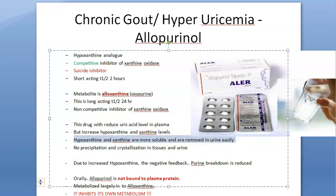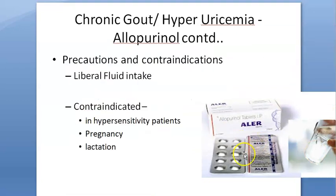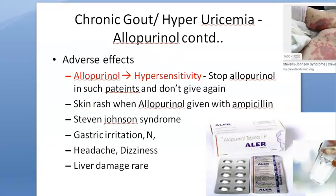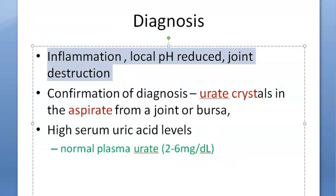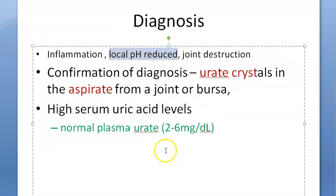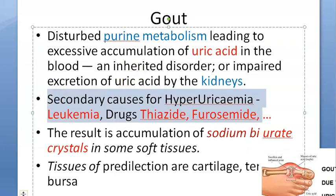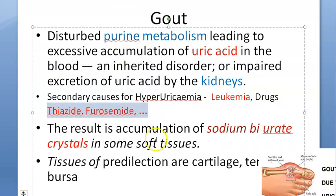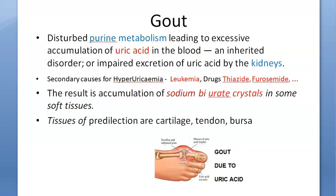The xanthine and hypoxanthine that accumulate with allopurinol are removed in the urine easily because they are water soluble, so there is no uric acid problem. The normal plasma urate level is 2 to 6 milligrams per deciliter. At the joint, pH will be reduced because uric acid is acidic, and joint destruction can occur. Gout can also be caused by hyperuricemic drugs like thiazides and furosemide, or even by leukemia.